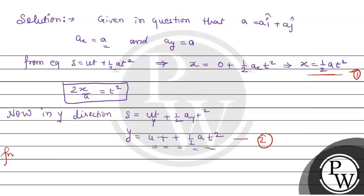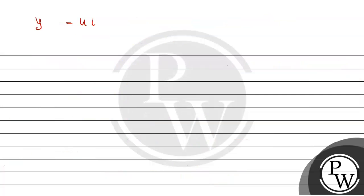So from equation 1 and 2, we'll calculate y minus x equals, y means ut plus half a t square, and x is half a t square. Half a t square, half a t square cancelled, so the value y minus x equals ut.